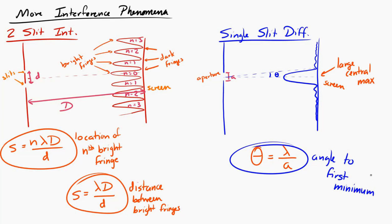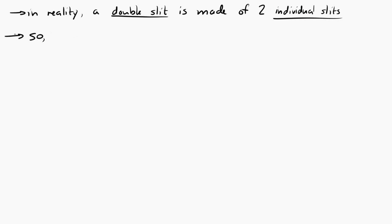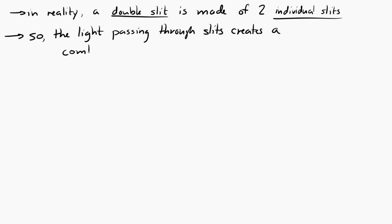Now, in reality, when you actually do a double-slit experiment, when you send light through two slits, it's going through two individual slits. So in reality, something that we've ignored is that when the light passes through one of the slits, each slit is going to create its own diffraction pattern. So in reality, when we send light through double slits, the observed pattern will be a combination of single-slit diffraction and two-slit interference.